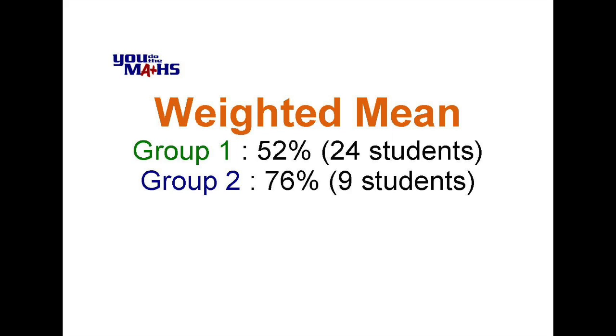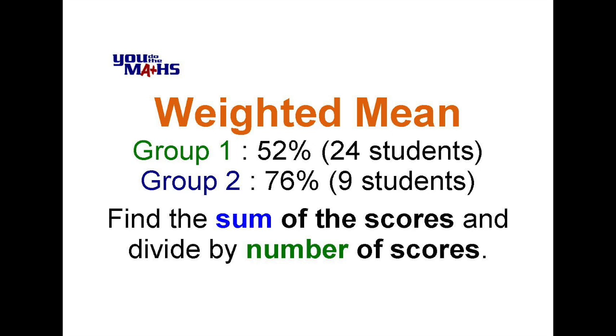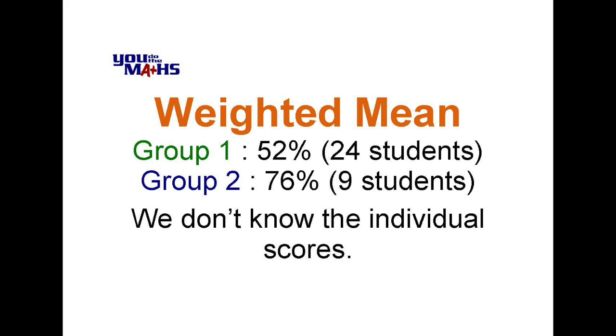So the way to determine the weighted mean is just like before—we need to add up all the scores or find the sum of all the scores and divide by the number of them. Well, we can see that there are 33 students in total, but we don't know the individual scores to add them all up, so that's a bit of a problem.